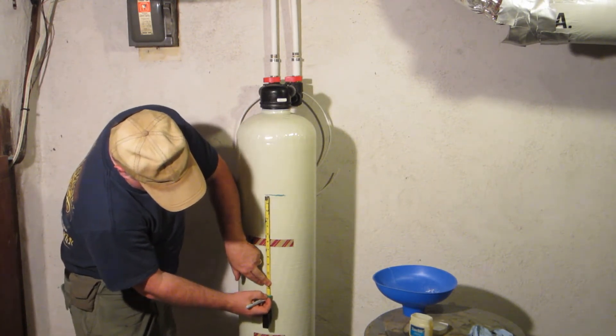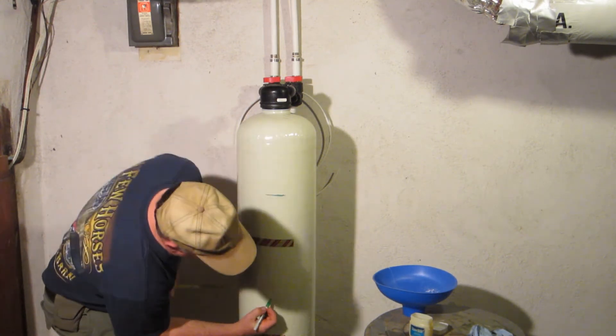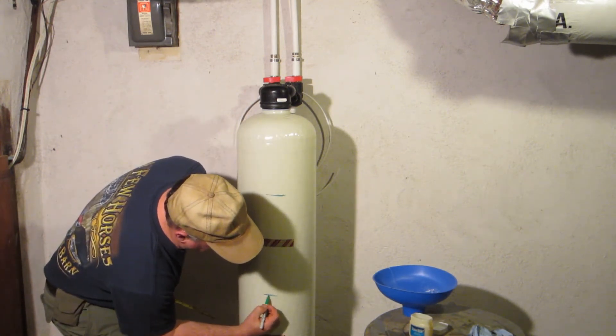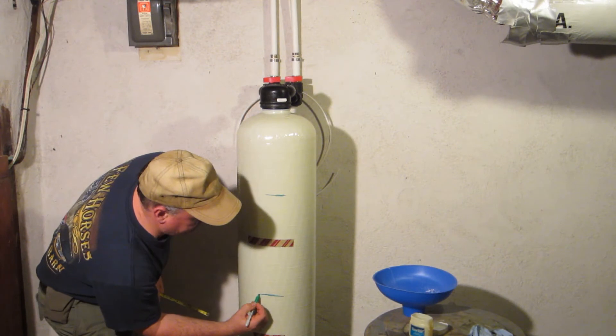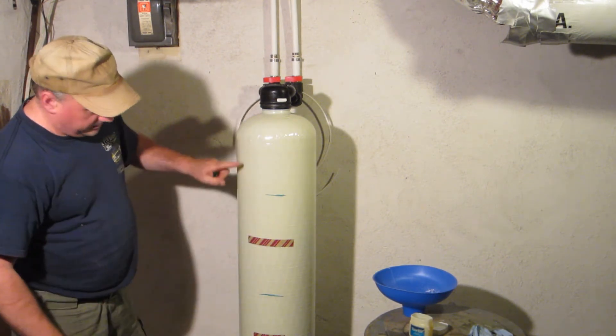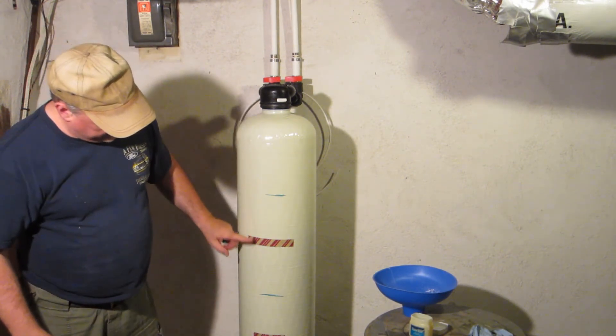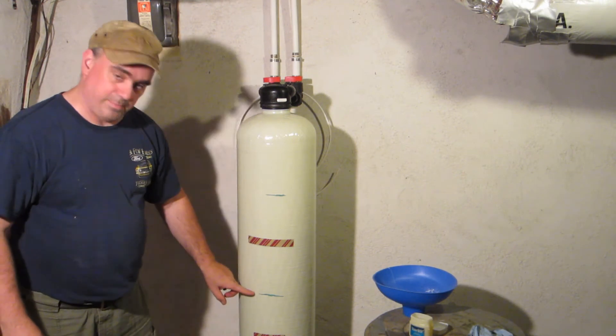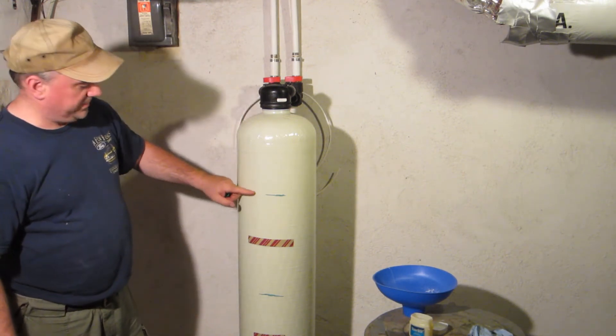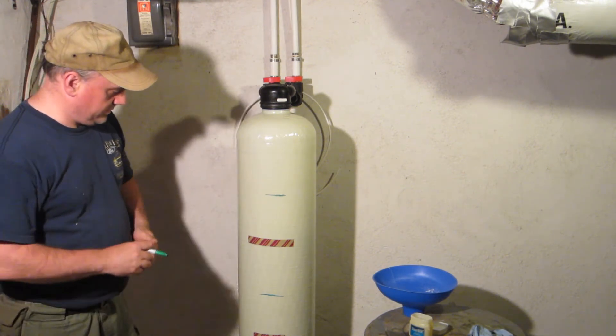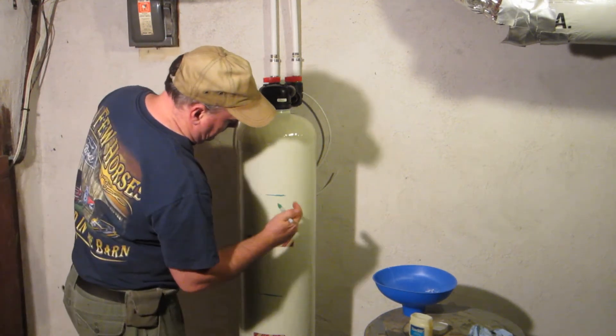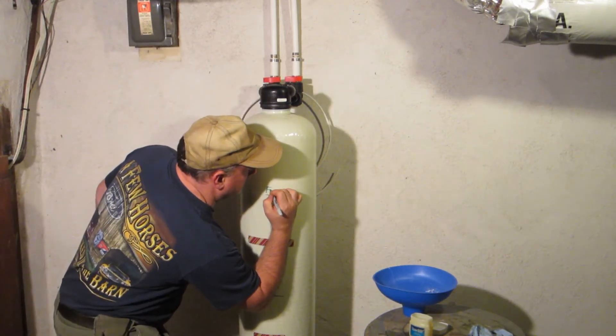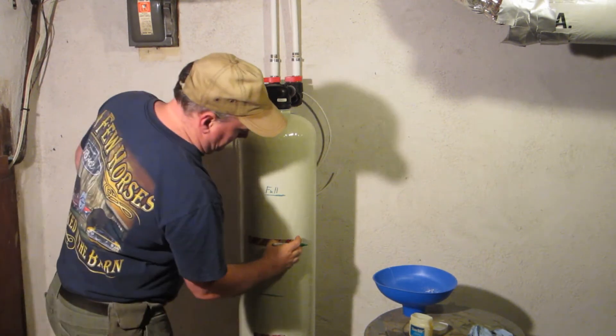So then 13 inches down from there. All right, right around here. That's the low line. So if I wait until the level of the calcite, which is now here, gets down to here, and then when I put one bag in, it should fill it up to here.